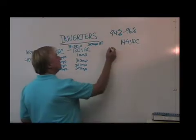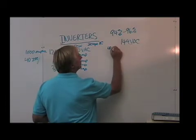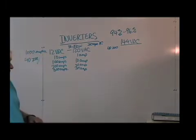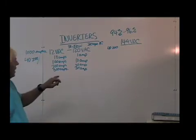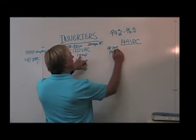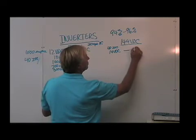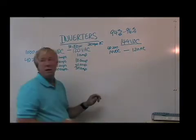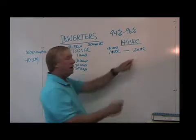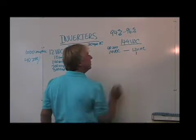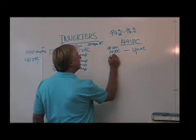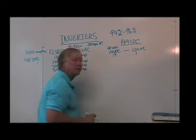First off, if I need from 144 DC to 120 AC, if I need 1 amp of AC, what I need to draw off of 144 DC is nine-tenths of an amp.